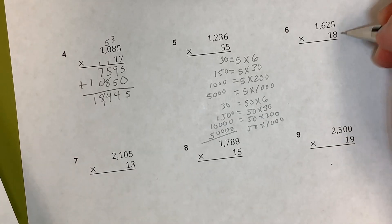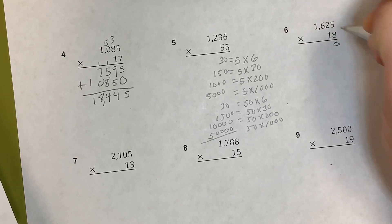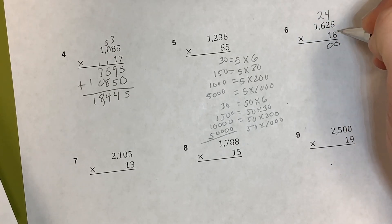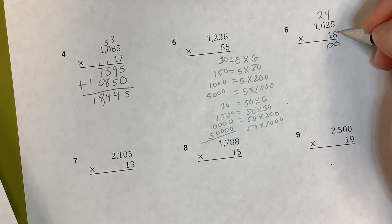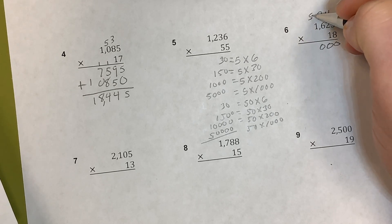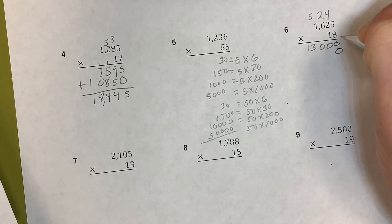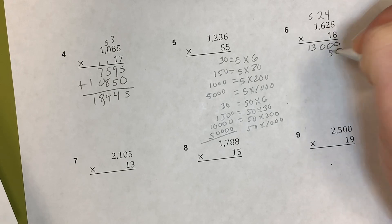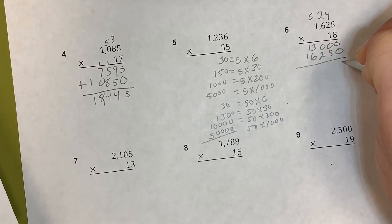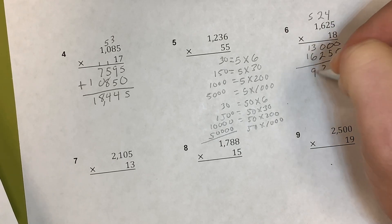Let's do one more in standard algorithm since you get the idea now. 8 times 5 is 40, carry 4. 8 times 2 is 16 plus 4 is 20, carry 2. 8 times 6 is 48 plus 2 is 50, carry 5. 8 times 1 is 8 plus 5 is 13. Adding a 0 for the tens: 1 times 5 is 5, 1 times 2 is 2, 1 times 6 is 6, then 1. Adding: 0, 5, 2, 6 plus 3, and 1 plus 1.